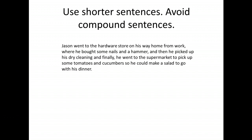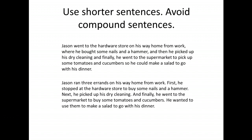Revised: 'Jason ran three errands on his way home from work. First, he stopped at the hardware store to buy some nails and a hammer. Next, he picked up his dry cleaning. And finally, he went to the supermarket to buy some tomatoes and cucumbers. He wanted to use them to make a salad to go with his dinner.' Not only have we broken this into shorter sentences and avoided the compounds, but we have markers that tell the reader how to think about things. We say right up front he ran three errands — then first, next, and finally. That helps a great deal with comprehension.